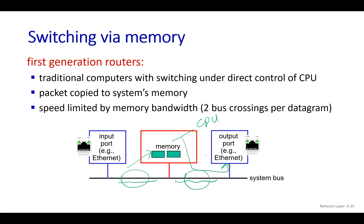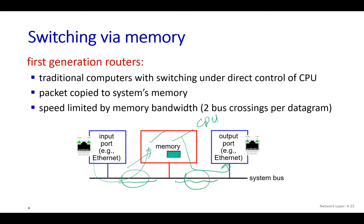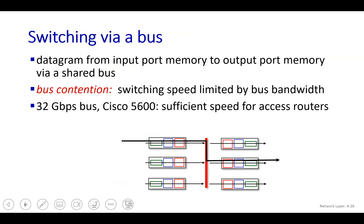This approach is obviously slow. The packet has to cross two buses, so it cannot be forwarded faster than the bus speed. Another limitation is memory bandwidth. The packet arrives, signals the CPU via interrupt, is copied into memory, the CPU reads the header, decides the output port, and then the packet is forwarded. First-generation routers were quite slow because of this technique.